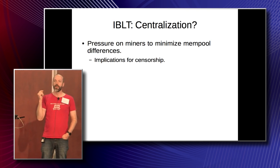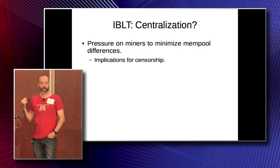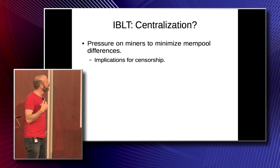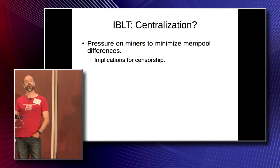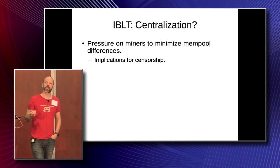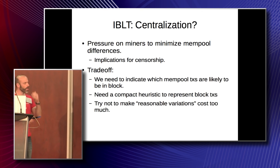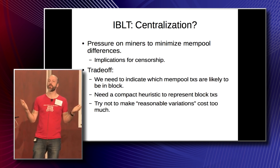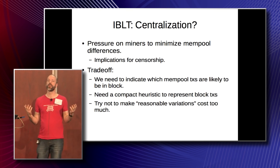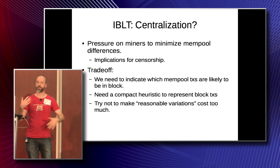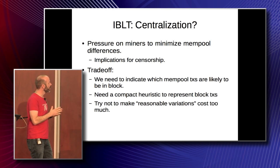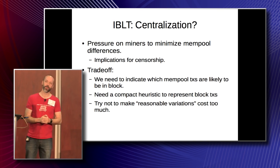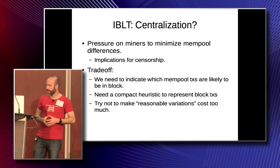The issue that comes up is this helps against the centralization problem in one sense — there's less pressure on miners to collaborate into single pools because they've got faster block transmission. But it does put pressure on homogenization, because this scheme works best if your mempools are identical, which potentially opens the door to things like censorship. So we really wanted a trade-off. You do need some heuristic to indicate what transactions are likely to be in the block. You can't throw the entire mempool into the IBLT, because if mempools are overfull there's going to be way too much in the IBLT and the subtraction won't help. So you need a fairly compact heuristic, with the aim of making reasonable mining variations as efficient as possible.